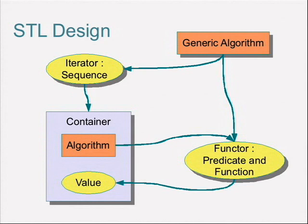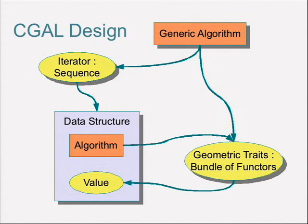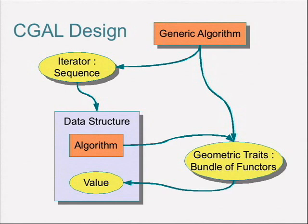The main difference in CGAL is that we need to query properties of geometric objects — points, curves — through multiple functors or predicates for each algorithm. We gather these in what we call the geometric traits class concept. We also don't manipulate only sequences: a convex hull in 2D is a sequence, but in 3D it's more complex, and a triangulation in 2D is also complex. So for some algorithms, we have a graph interface based on the Boost Graph Library concepts, allowing BGL algorithms to run on CGAL data structures. Some algorithms also provide visitor callbacks at specific events during execution.